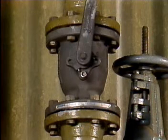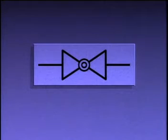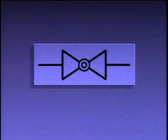The body of a ball valve may be either cylindrical or round in shape. On a piping system diagram, a ball valve symbol generally looks like this.